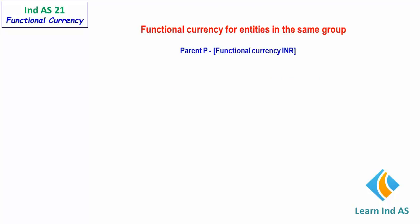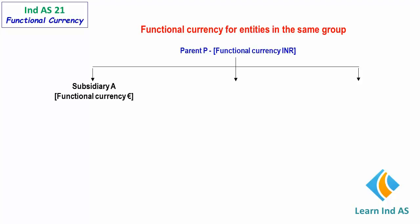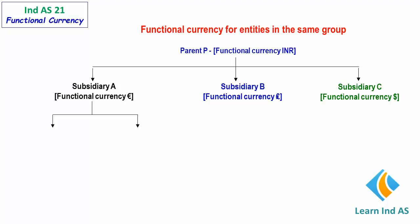Let us now look at functional currency for entities in the same group. Let us assume parent P has a functional currency of INR. It may have subsidiaries, and each of the subsidiaries can have a different functional currency, as can be seen in this graphical presentation.